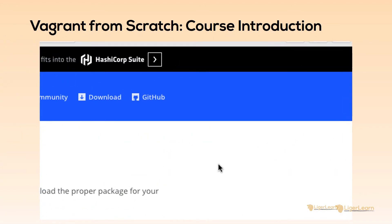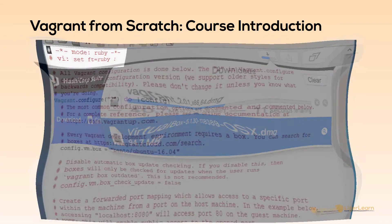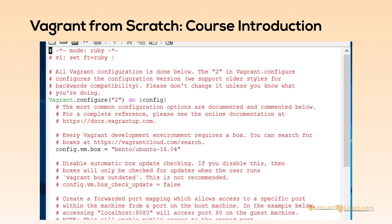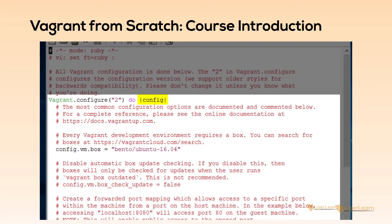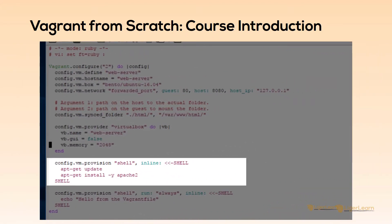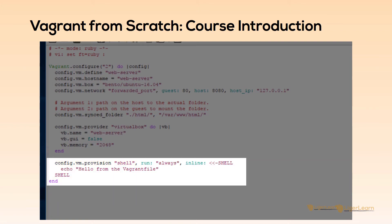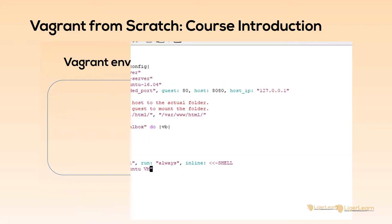From there, we move on to the heart of Vagrant, which is the Vagrant file. This is the configuration file you can customize that effectively allows you to have virtual machines as code. Once we've covered how you can have a specification for a single virtual machine within a Vagrant file, we'll move on to having more than one VM defined, and also to allocating private IP addresses to your VMs.